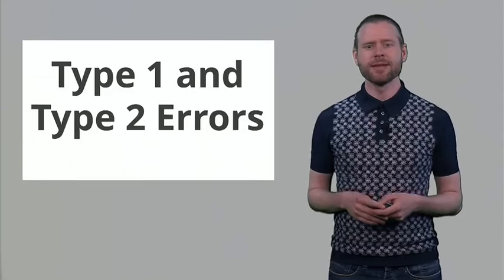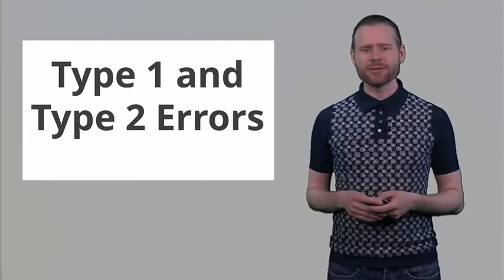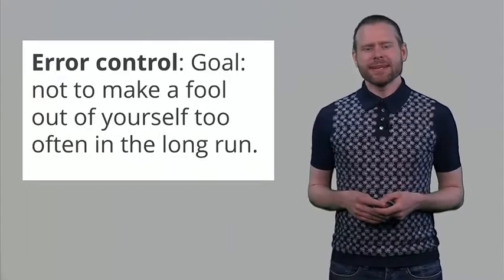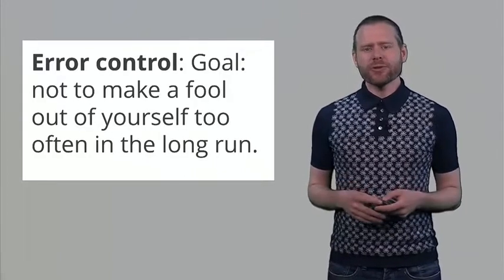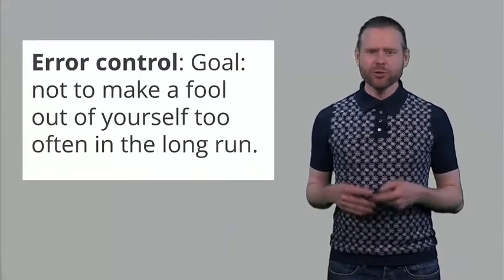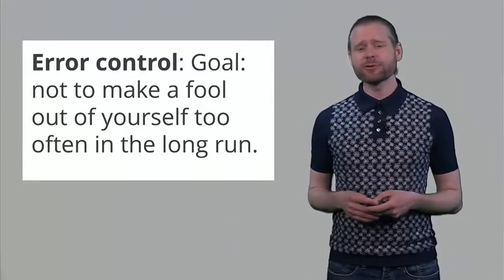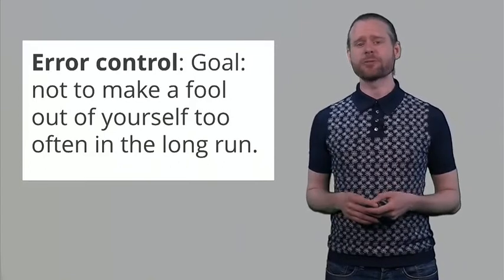When you say yes, I accept the null hypothesis or I will reject the null hypothesis, you are controlling the amount of times in the long run that you make a mistake. We talk about this in terms of the type 1 and type 2 errors that you can make. In the goal of error control, what you try to do is prevent making a fool out of yourself too often in the long run. I think this is a very useful thing to try when you draw inferences from your data.